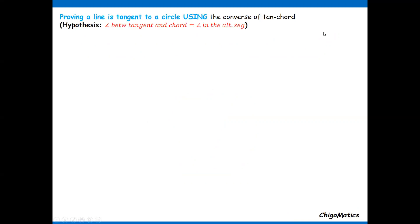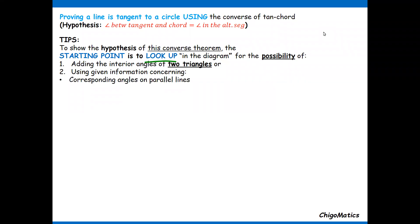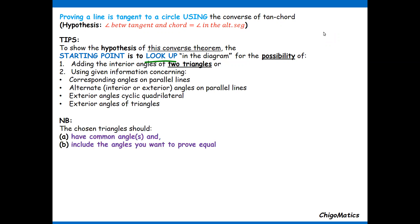When we use this converse theorem, your starting point is to look in the diagram for the possibility of adding the interior angles of a triangle or triangles, using given information concerning corresponding angles on parallel lines, alternate interior or exterior angles on parallel lines, exterior angles, cyclic quadrilateral, or exterior angles of triangles. Make sure those triangles have a common angle or angles, and they include the angles you want to prove equal.